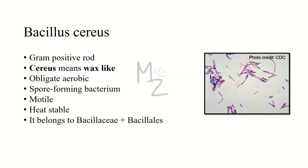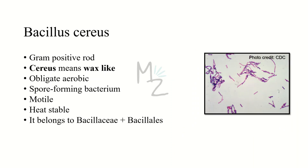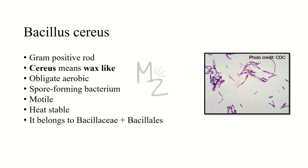Bacillus cereus is a gram positive rod. The word 'cereus' means wax-like, because its colonies appear gray or dull when cultured. It is an obligate aerobe and spore-forming bacterium. The spores, called endospores, are formed in unfavorable conditions like food scarcity. Spores are hydrated, dormant, and multi-shelled structures that protect the bacteria. Bacillus cereus is motile — unlike Bacillus anthracis which is non-motile — due to its flagellum. It is heat stable, which explains why reheated food can cause infections.